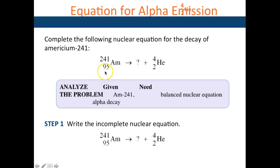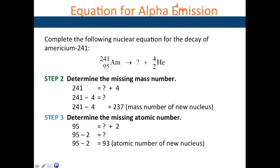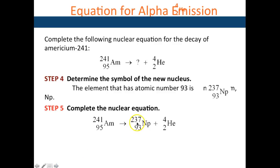Here you have americium-241 (95) undergoing alpha decay. The new element is 93, which is neptunium. So 93 plus 2 would give you 95, and the mass of this neptunium is 241 minus 4, which is 237. So neptunium 93, 237 would be the new element.